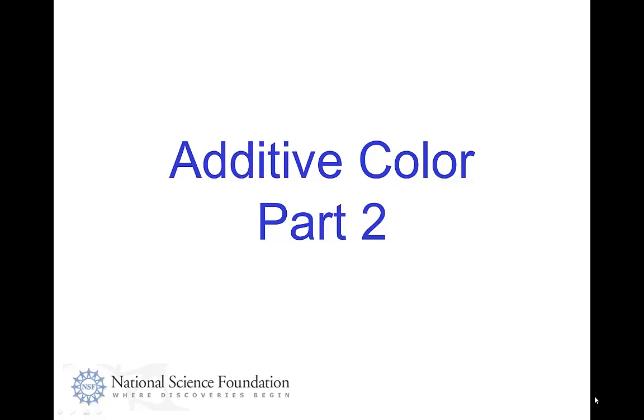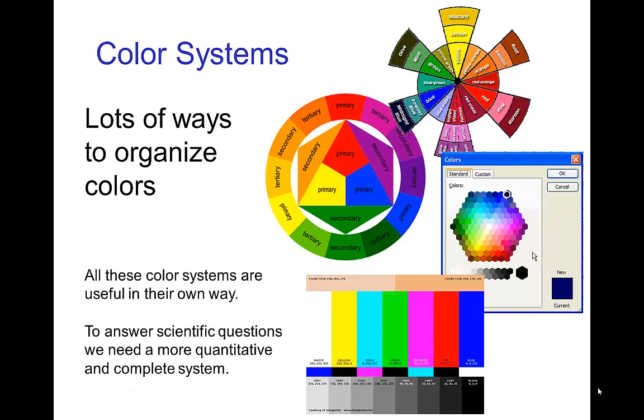Additive color, part two. Now there's lots of ways of organizing color in different types of color maps or systems, very common ones are color wheels. And each of these has its own utility, but we want to have some type of scientific way of organizing color that helps us make predictions about color.